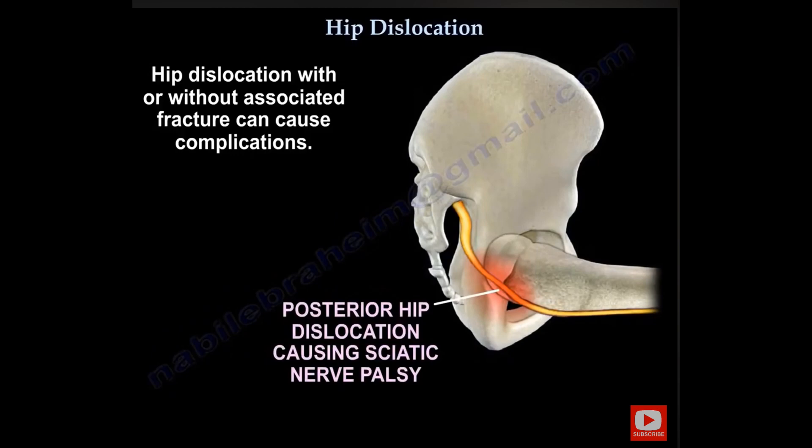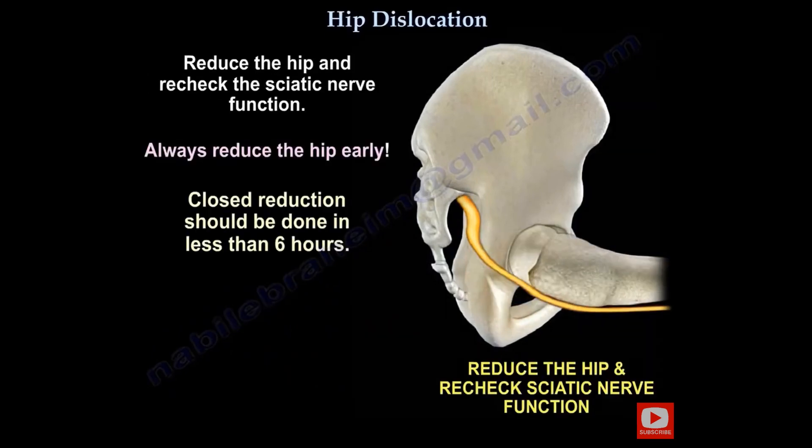Posterior dislocation of the hip can cause sciatic nerve palsy. You must examine the neurovascular status of the patient. You must reduce the hip early — closed reduction should be done in less than six hours to relieve pressure on the nerve and to avoid avascular necrosis of the femoral head.